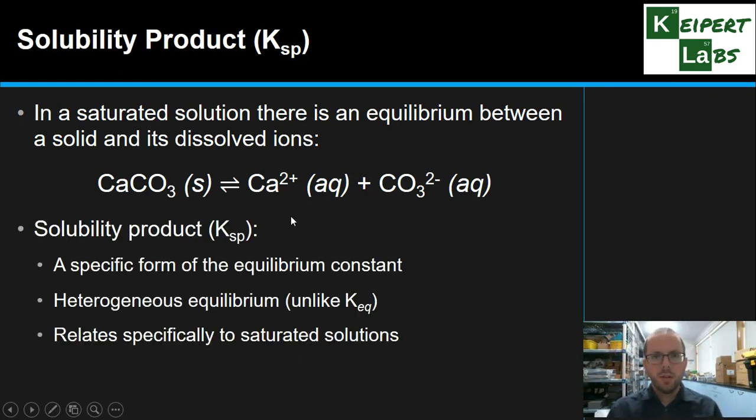So the solubility product, or Ksp, is a specific form of the equilibrium constant. We've looked at Keq before. It's just a particular variety of it that relates to heterogeneous equilibrium. We're not talking about everything being in the same state of matter here, not all gases, not all aqueous or whatever. Unlike generally for Keq, we're talking about that one side is a solid, the other side are aqueous. It's specifically relating to this kind of saturated solution.